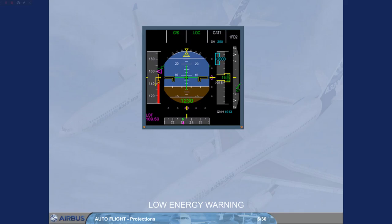This warning takes into account the aircraft deceleration rate and current flight path angle, which explains the low-energy wording. It is available when the aircraft is on departure and arrival, between 100 feet and 2,000 feet RA and in configuration 2, 3, or full.